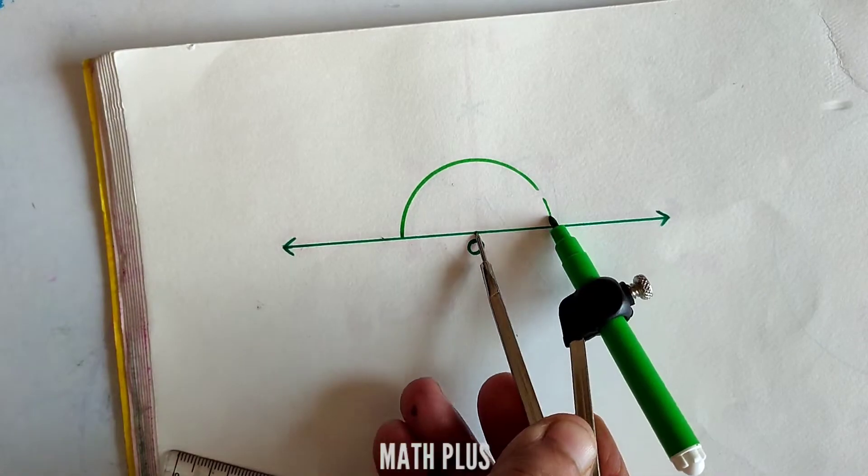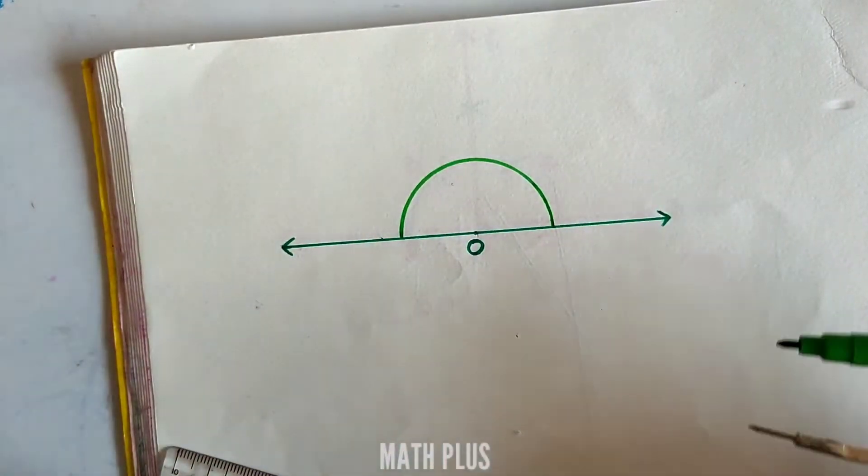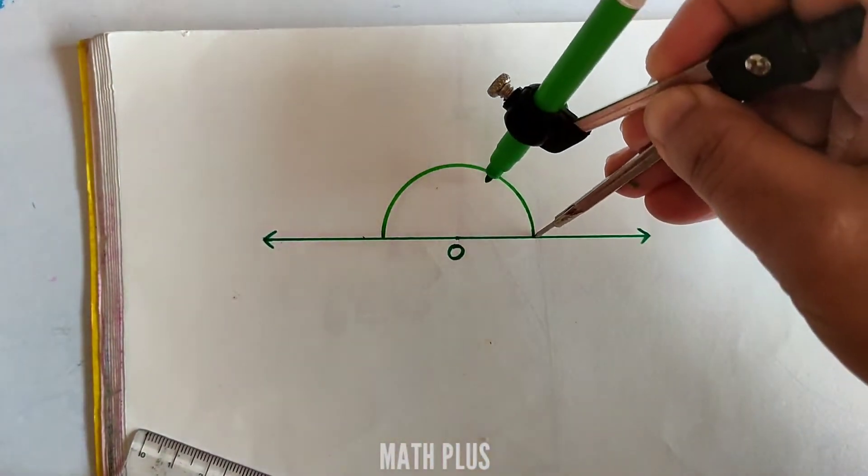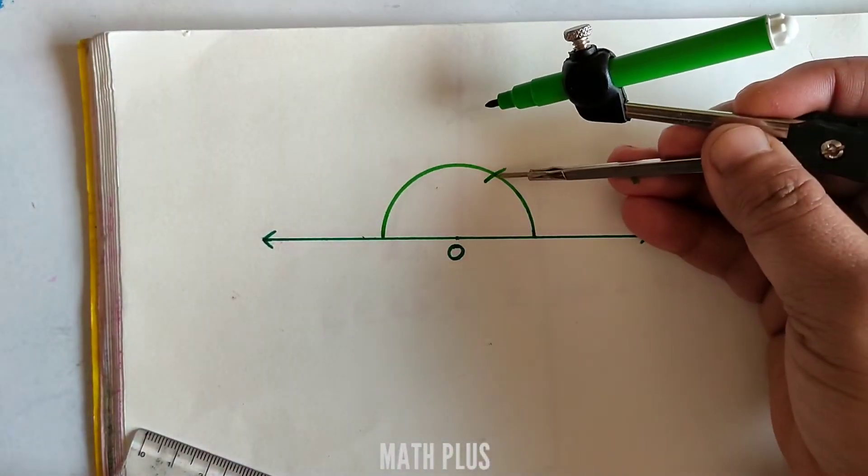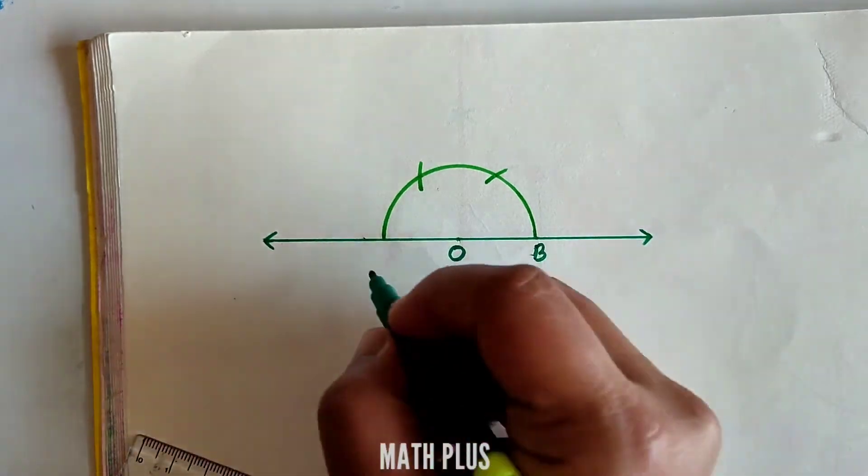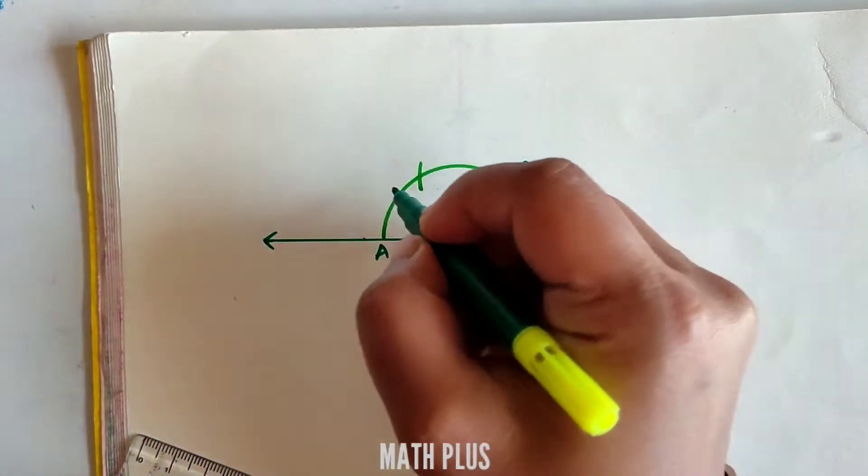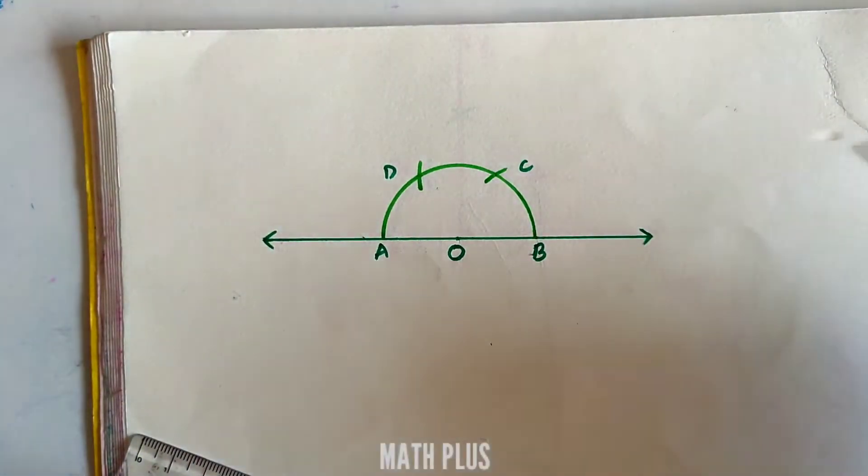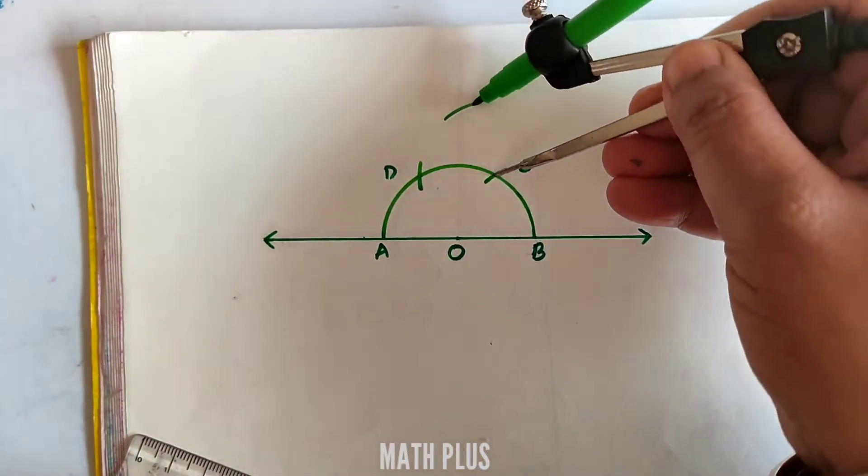With the same radius keeping at one point, draw an arc. Keeping at the arc, draw another arc. Mark all the points and name them A, B, C, and D. Keeping at C with a certain radius, and with the same radius keeping at D, mark two arcs above the semicircle.